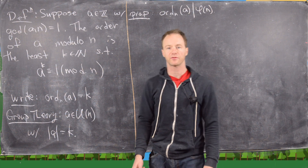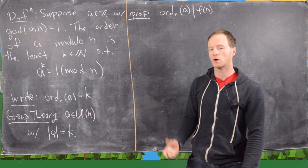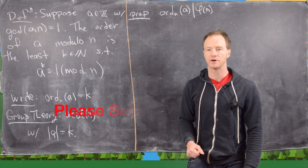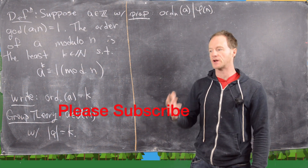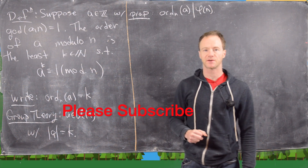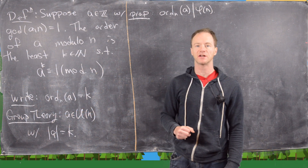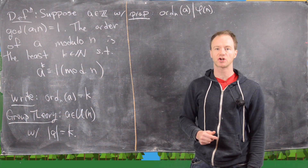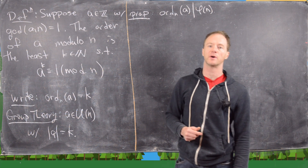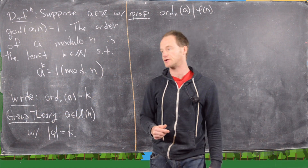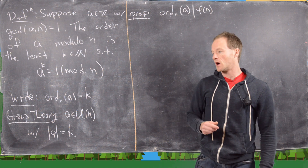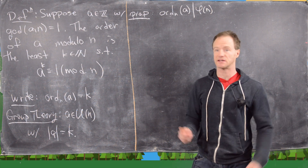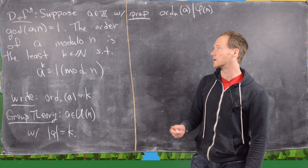In this video we're going to look at three things: the notion of the order of an integer modulo n, what it means for something to be a primitive root modulo n, and the structure of the group of units modulo n. These are all really intertwined ideas so it makes sense to do them all at once.